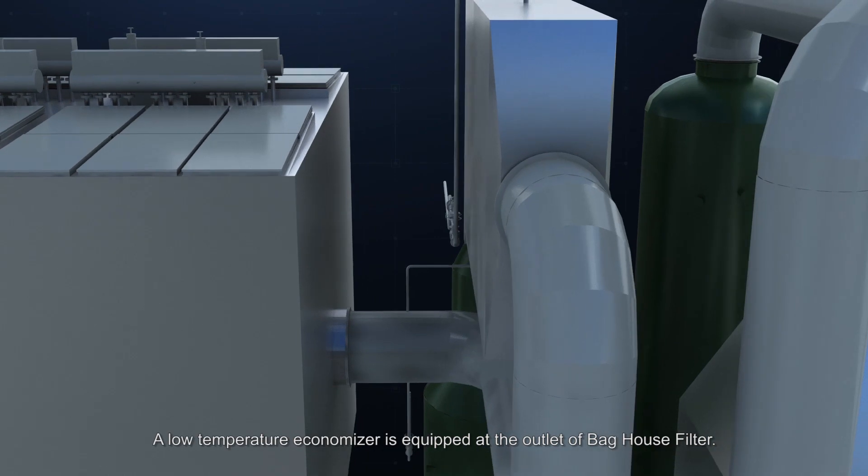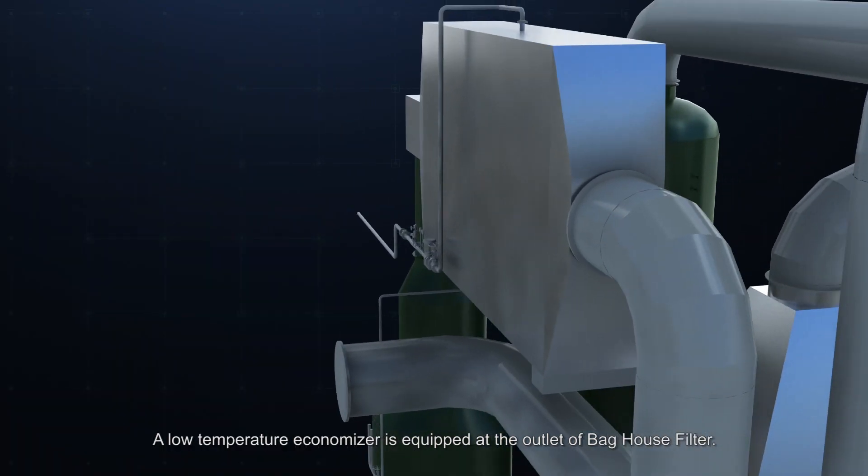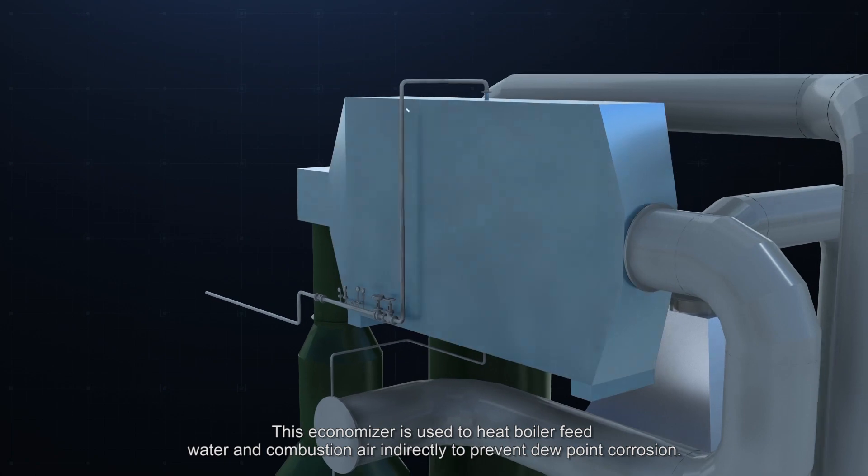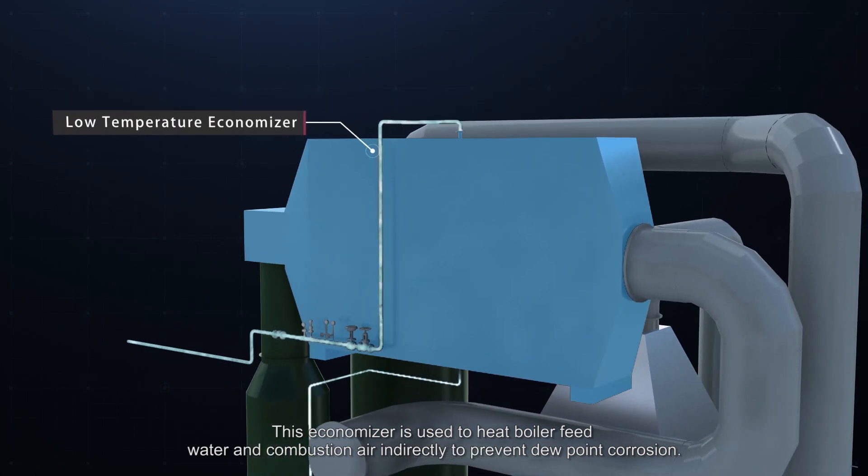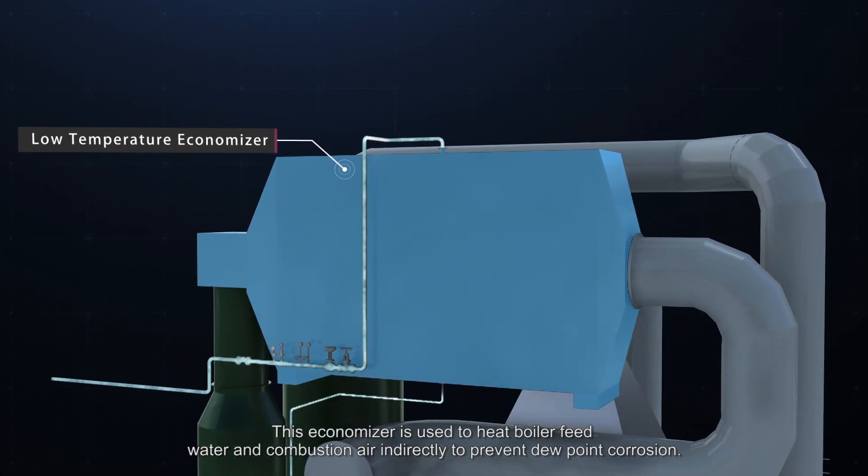A low-temperature economizer is equipped at the outlet of bag-house filter. This economizer is used to heat boiler feed water and combustion air indirectly to prevent dew point corrosion.